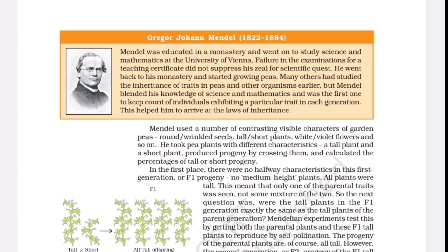He took pea plants with different characteristics — a tall plant and a short plant — produced progeny by crossing them, and calculated the percentages of tall or short progeny. In the first place, there were no halfway characteristics in this first generation, or F1 progeny — no medium-height plants. All plants were tall. This meant that only one of the parental traits was seen, not some mixture of the two. So the next question was: were the tall plants in the F1 generation exactly the same as the tall plants of the parent generation? Mendelian experiments test this by getting both the parental plants and these F1 tall plants to reproduce by self-pollination. The progeny of the parental plants are, of course, all tall.